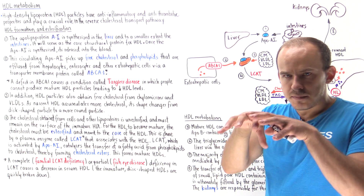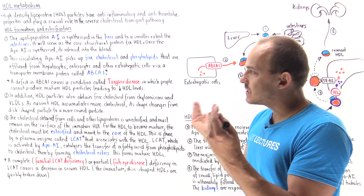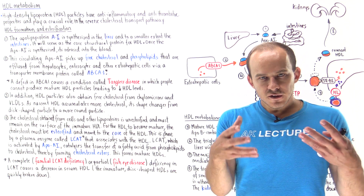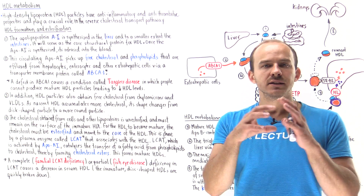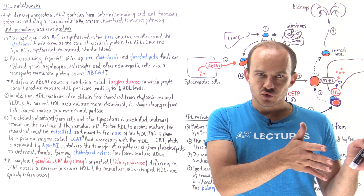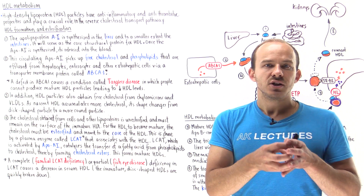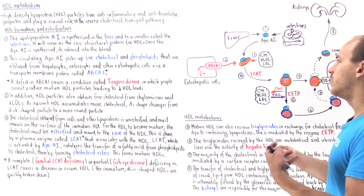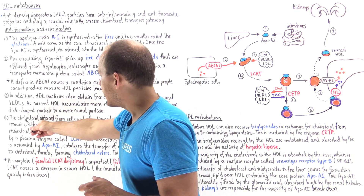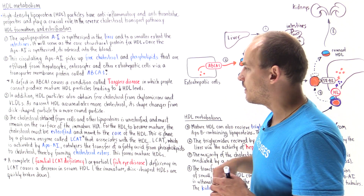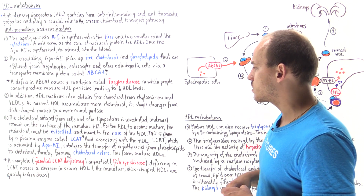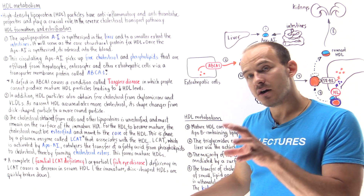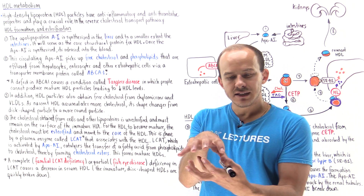For the HDL molecule to become large, spherical, and mature, we have to convert free cholesterol to esterified cholesterol, or cholesterol esters. The free cholesterol stays on the surface and gives HDL a disc-like shape. Once we convert free cholesterol into cholesterol esters, we can move it into the core of the HDL molecule, which bulks it up and gives it a sphere-like shape — now called a mature HDL particle. The cholesterol must be esterified and moved into the core to give it a spherical shape.